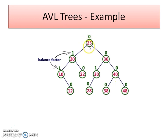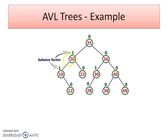The balance factor of every node is written just above each node — here 0, 1, -1, 0, 0, 0, 1 and so on. For node 25: the height of the left subtree is 3 and the height of the right subtree is also 3. So 3 minus 3 equals 0, and that's why the balance factor of node 25 is 0.